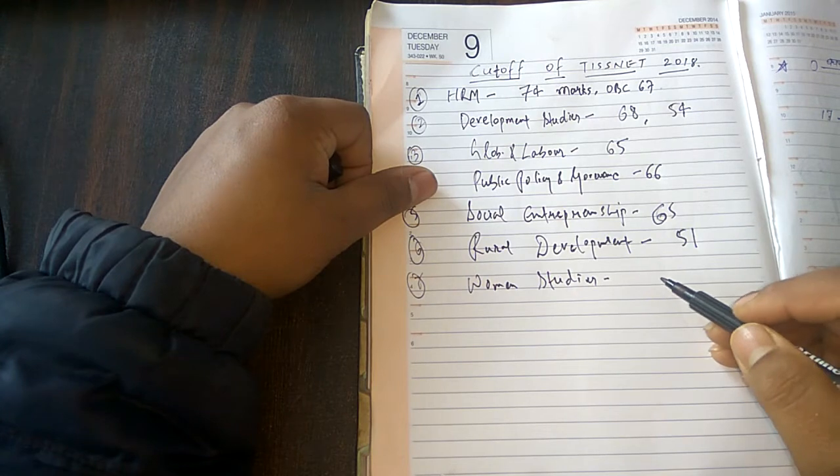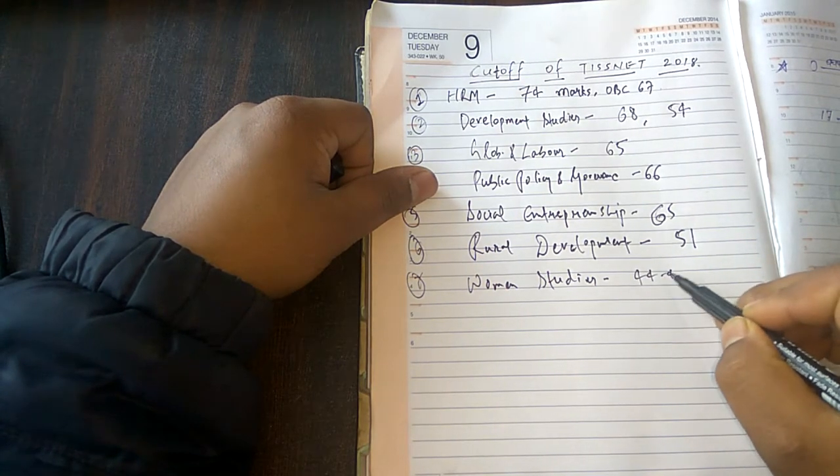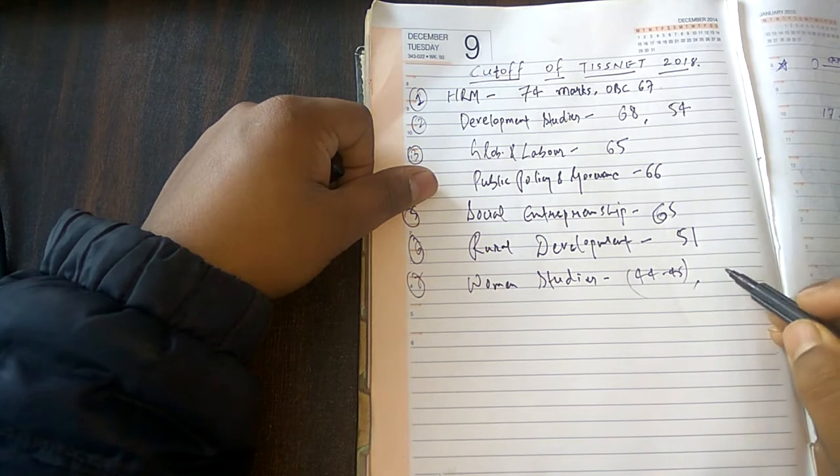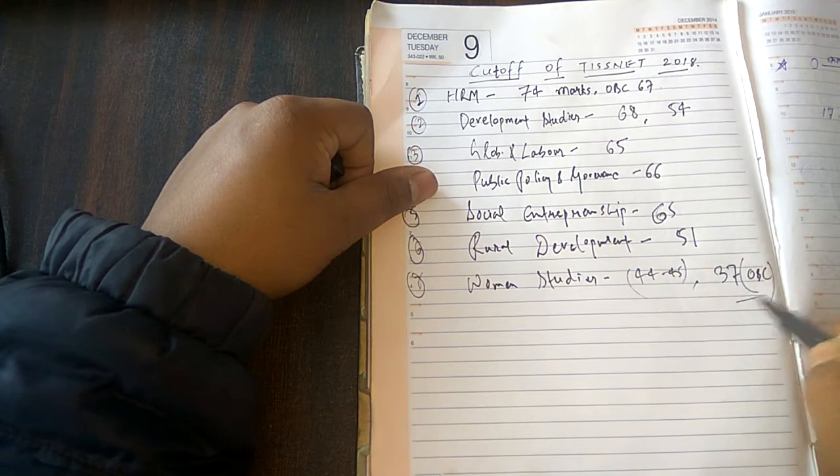I think for general it should be around 44 to 45. I belong to OBC category, and 37 marks for the OBC category is the cutoff this year.